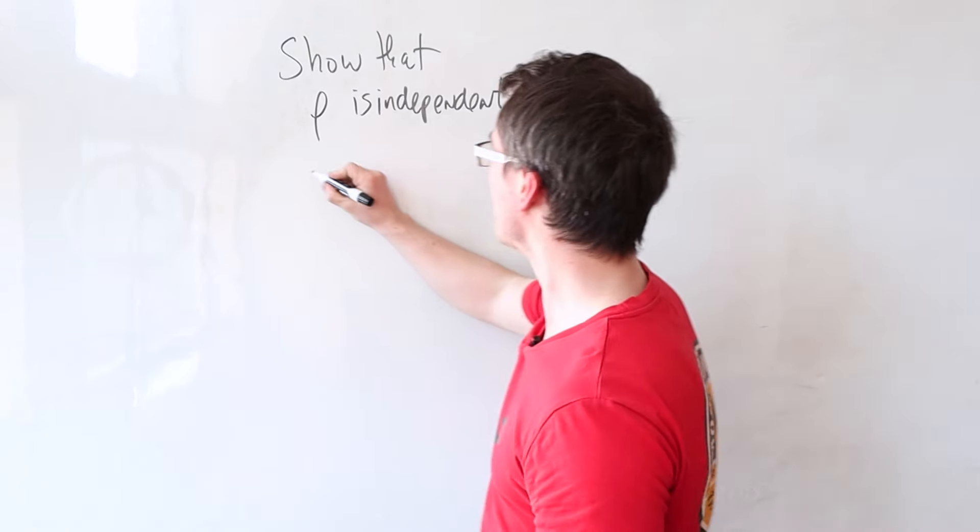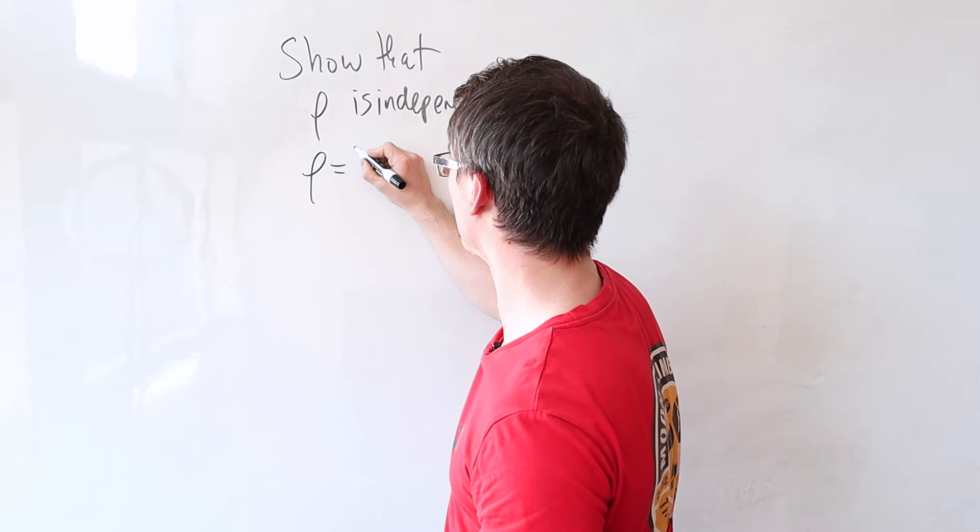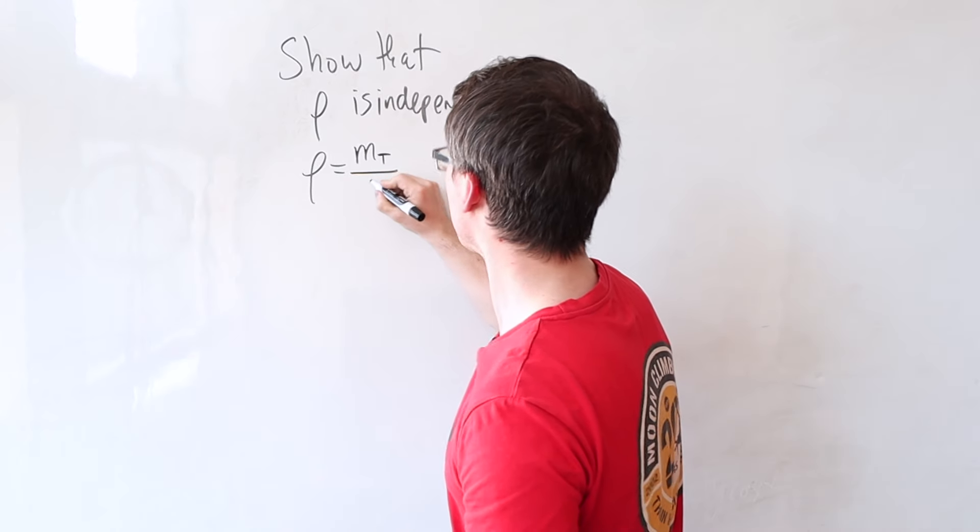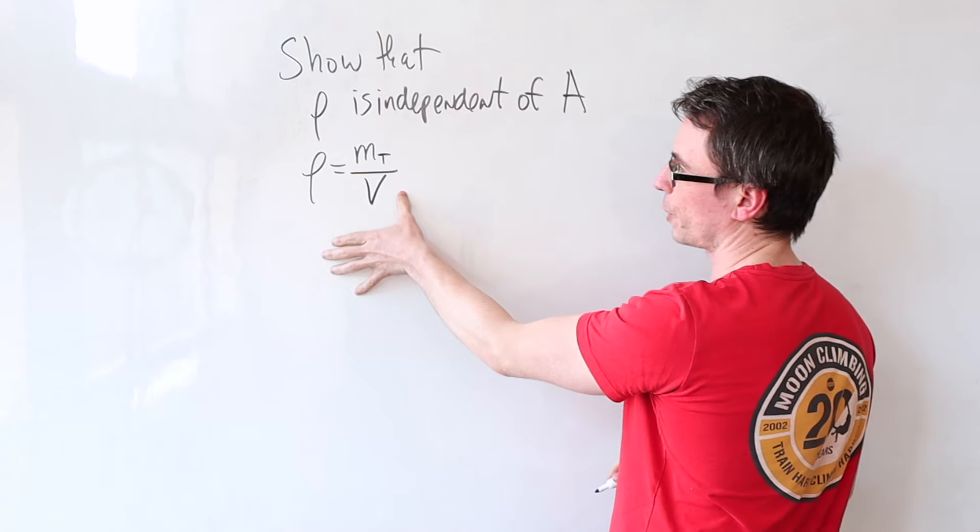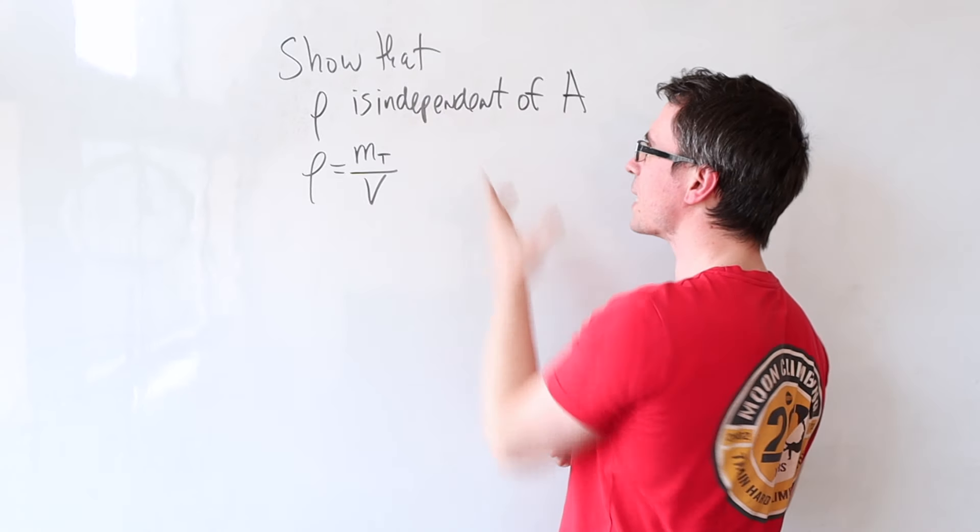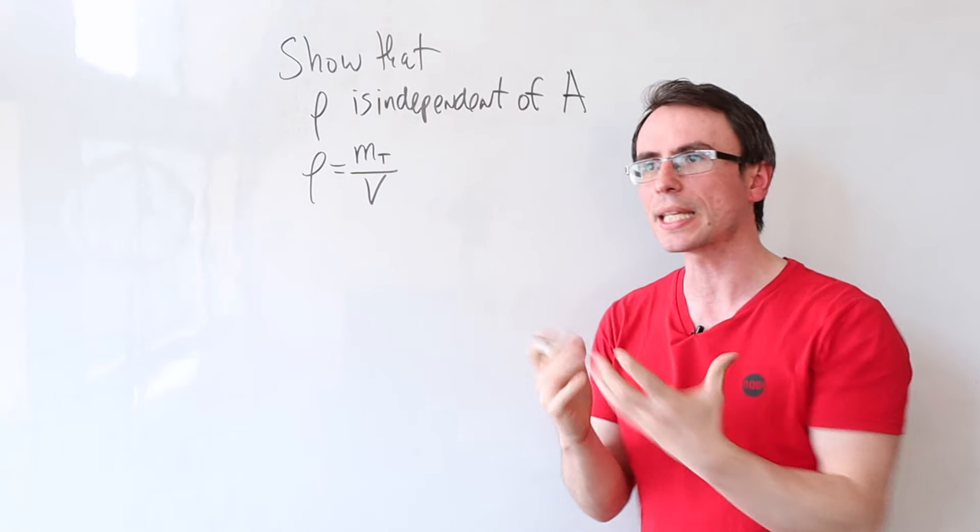The density of a nucleus is just equal to the total mass of the nucleus and all of its constituents divided by the total volume of the nucleus. Well, what is the total mass equal to?